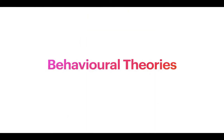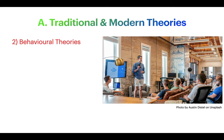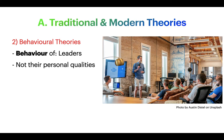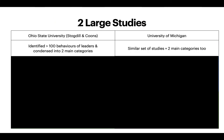Let's look at behavioral theories about leadership, still under the traditional and modern theories chapter. Behavioral theories focus on the behavior of leaders, not so much their personal qualities. Two large studies were done — by Ohio State University (Stockdale and Kuhns) and the University of Michigan. In Ohio, they identified more than 100 behaviors of leaders and condensed them into two large categories. In Michigan, they did a similar set of studies and also came up with two main categories — quite interesting that two separate studies came up with two categories each.